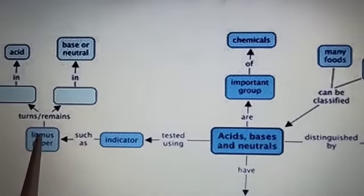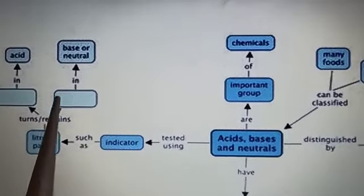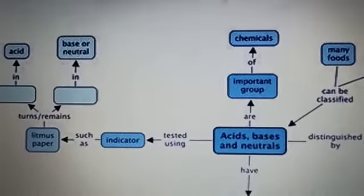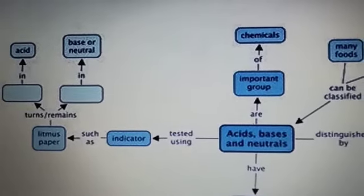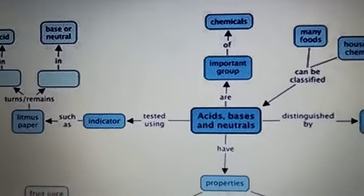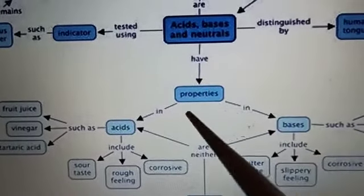If you are using the red litmus, it will remain same in case of acid and it will change to blue in case of base. Remember always red litmus changes to blue in case of base and blue litmus changes to red in case of acid.